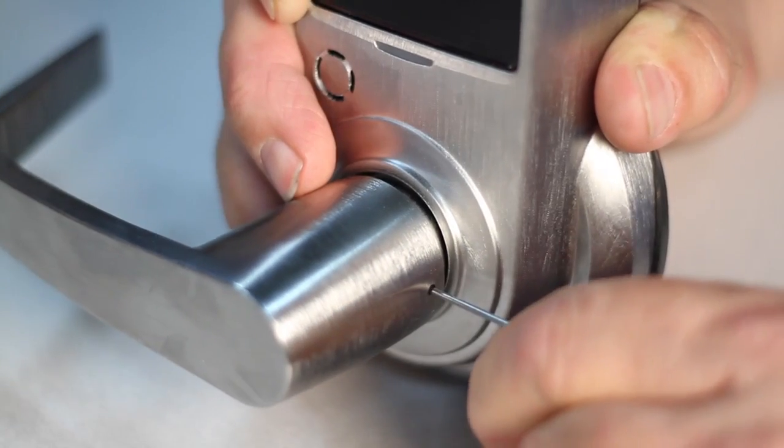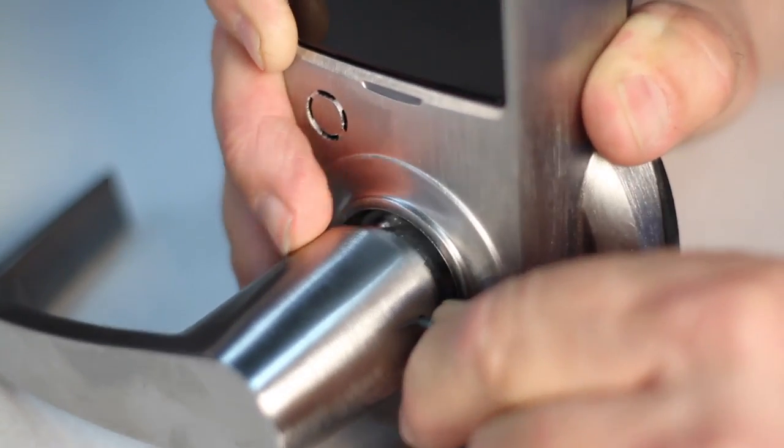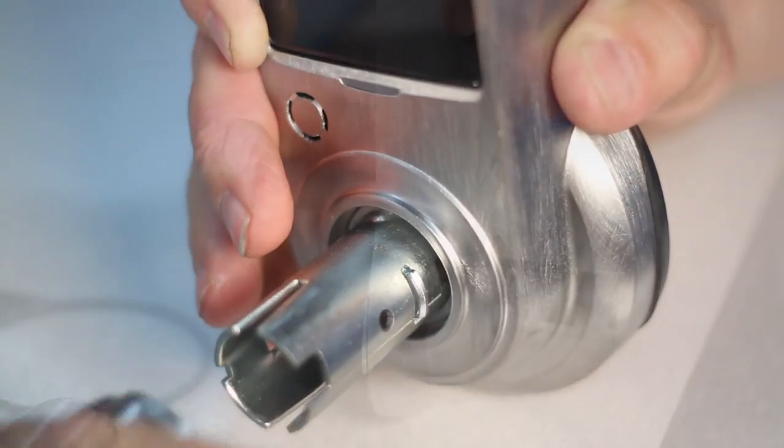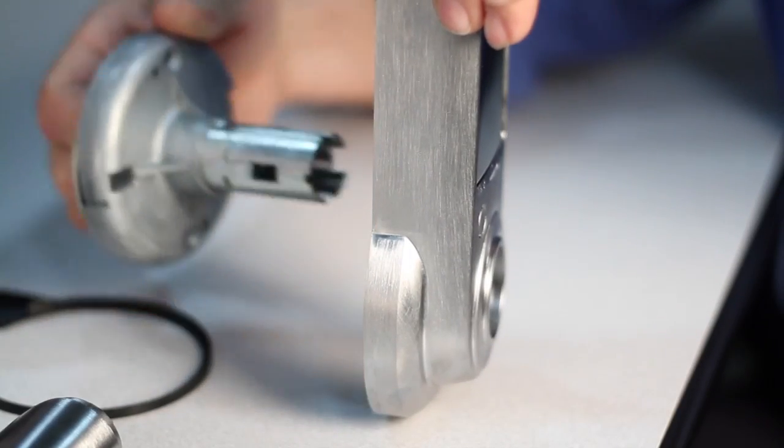Disassemble the inside escutcheon by removing the inside lever with the lever removal tool supplied. Separate the inside support assembly from the inside escutcheon.